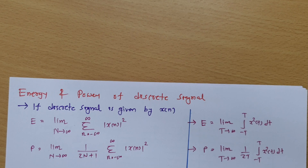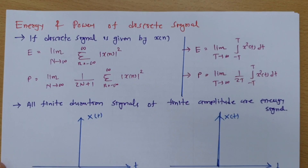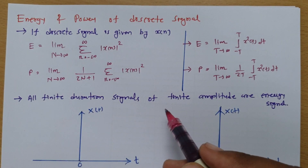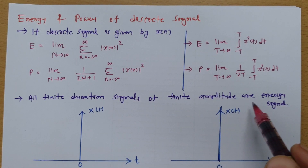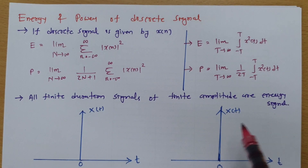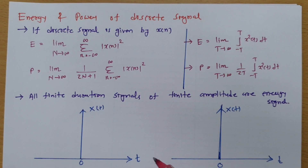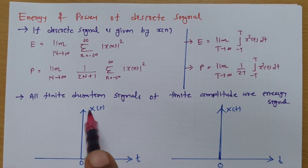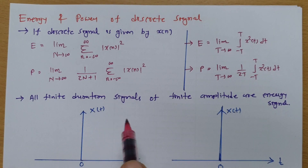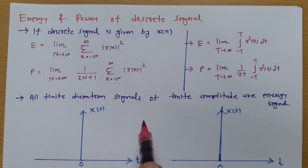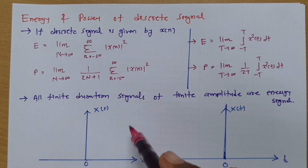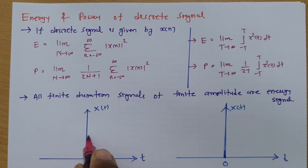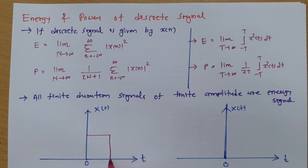Now let us discuss a few basics regarding energy and power for discrete signals. All finite duration signals with finite amplitude are energy signals. Whenever you have been given any signal, you will have to calculate only energy if the duration of the signal is finite with finite amplitude. The reason is that such a signal cannot be a power signal. For example, a rectangular pulse signal is an energy signal.